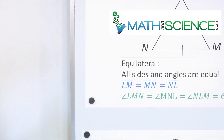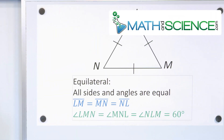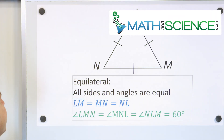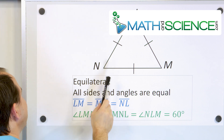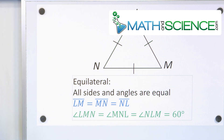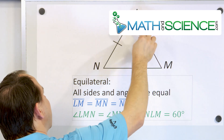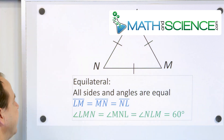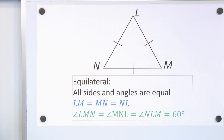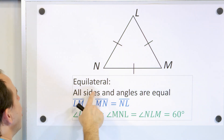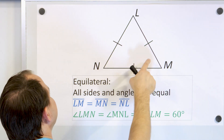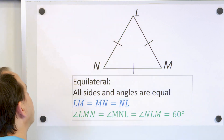Let's talk about some different kinds of triangles. The easiest to understand is called an equilateral triangle. Equilateral just means that all sides are equal — that's basically what it means. All sides are equal and all angles on the inside are equal.